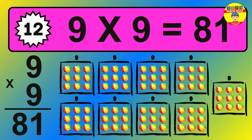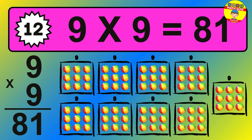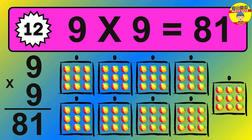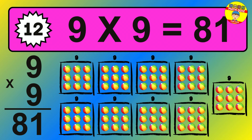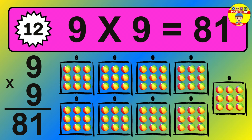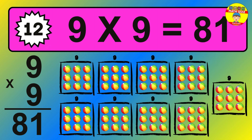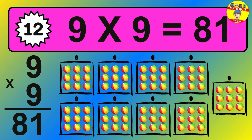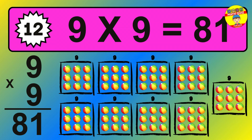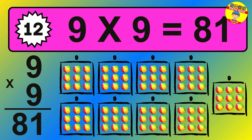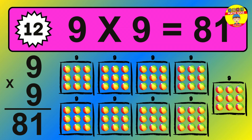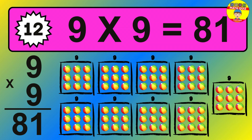Question 12. 9 times 9 equals what? The answer is 9 times 9 is 81. To calculate, we have 9 groups with 9 balls each one. So how many balls do we have? 81 balls.